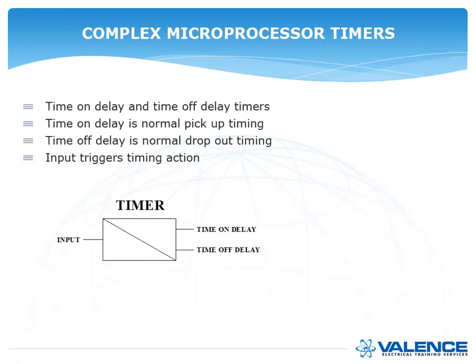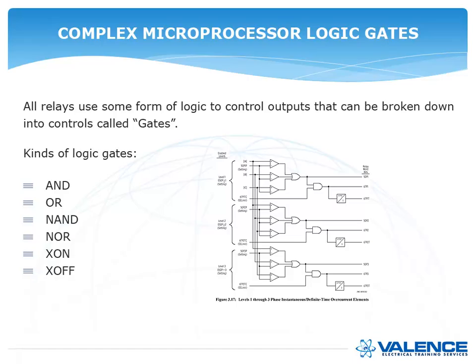Then you can have timers — a time-on delay and a time-off delay timer. The time-on delay is normally a pickup timing, so whenever that input turns on, the timer starts, and once that timer expires, the time-on delay will turn to a 1. A time-off delay is when that input goes away, the off delay timer starts, and when the timer expires, it'll send the time-off delay output. Those inputs trigger timing actions.